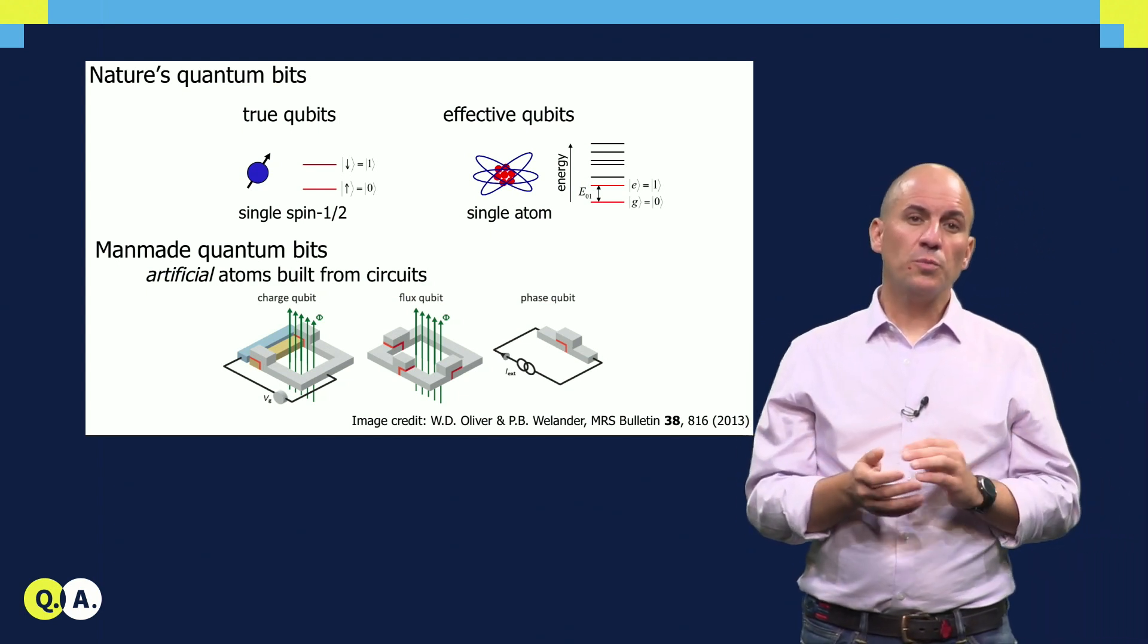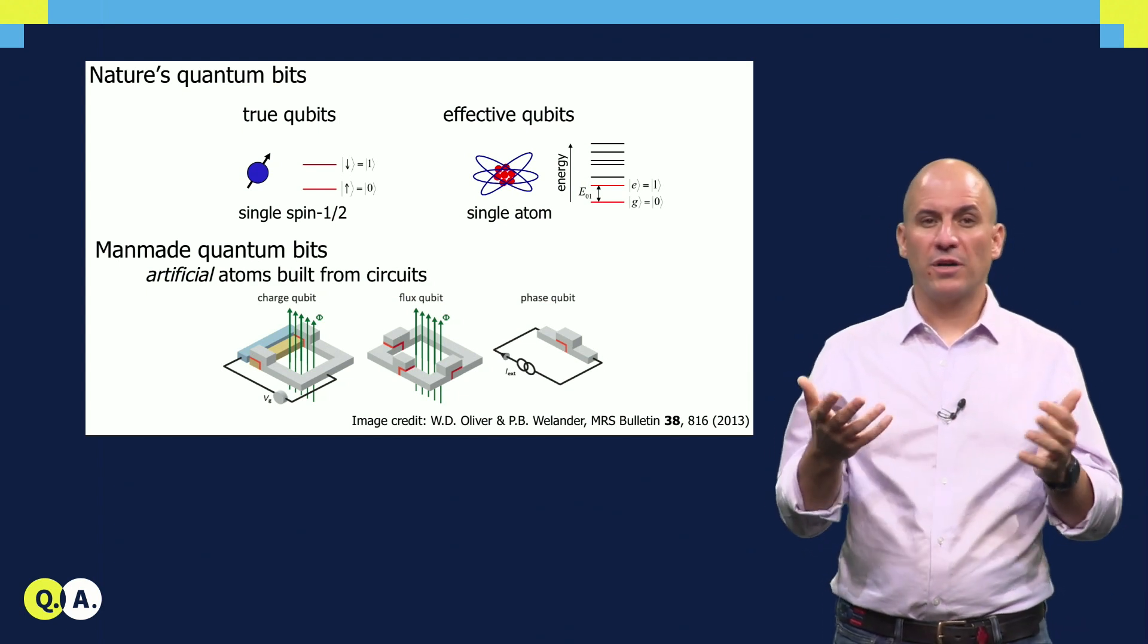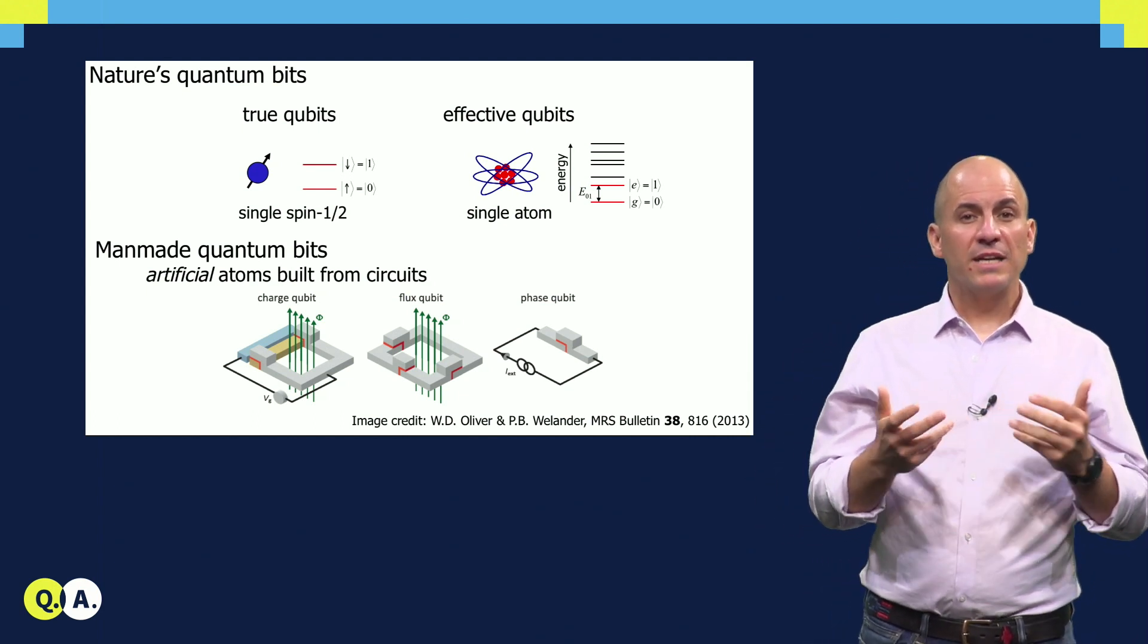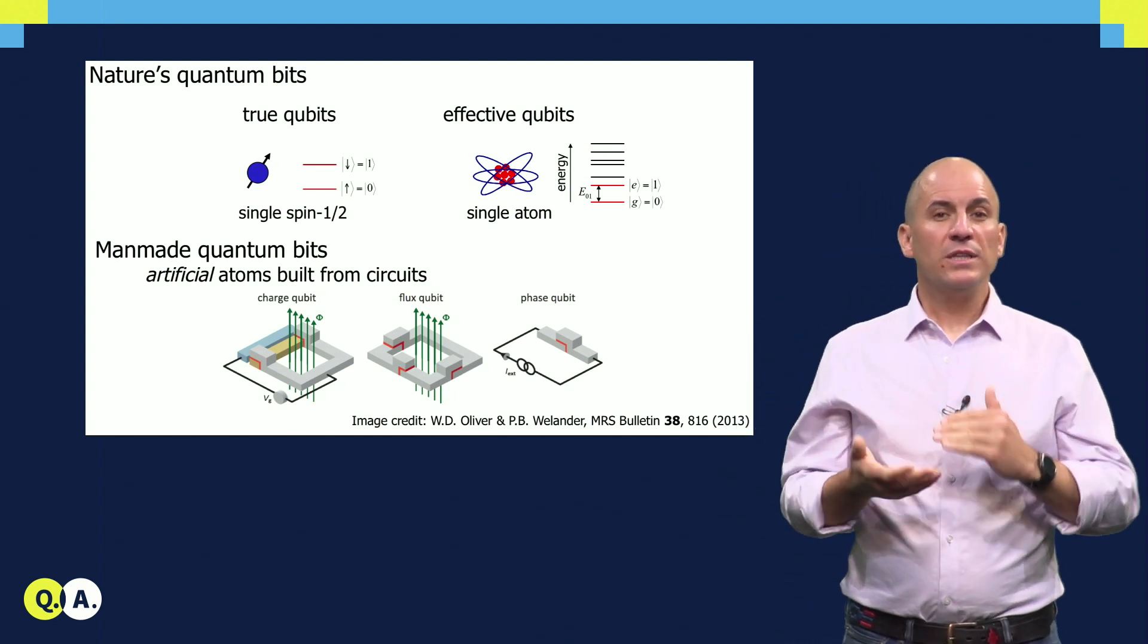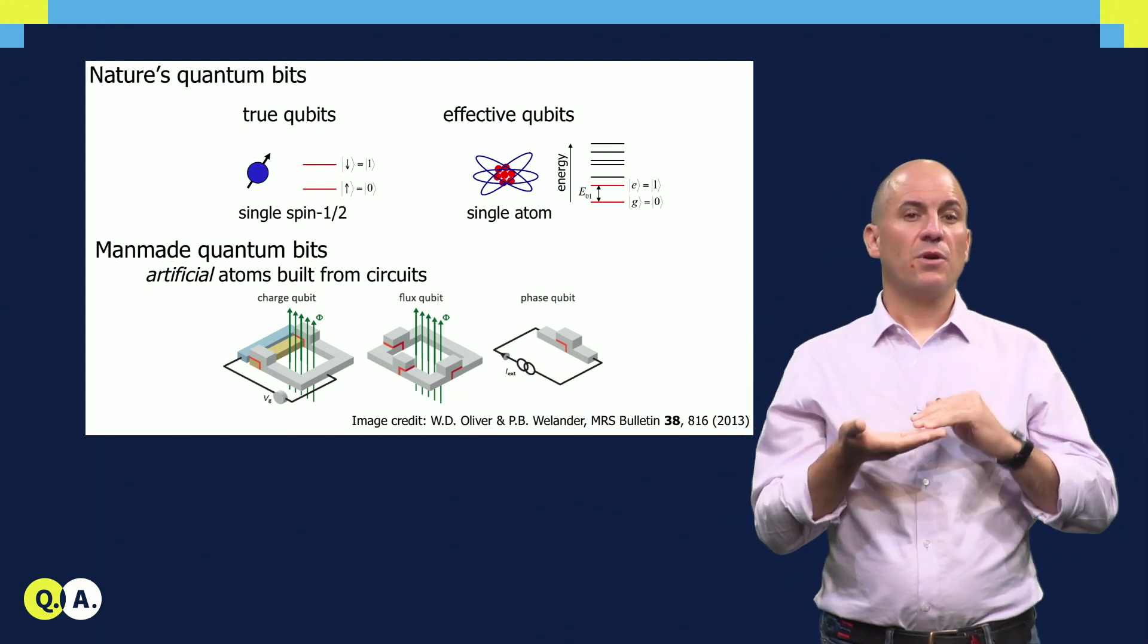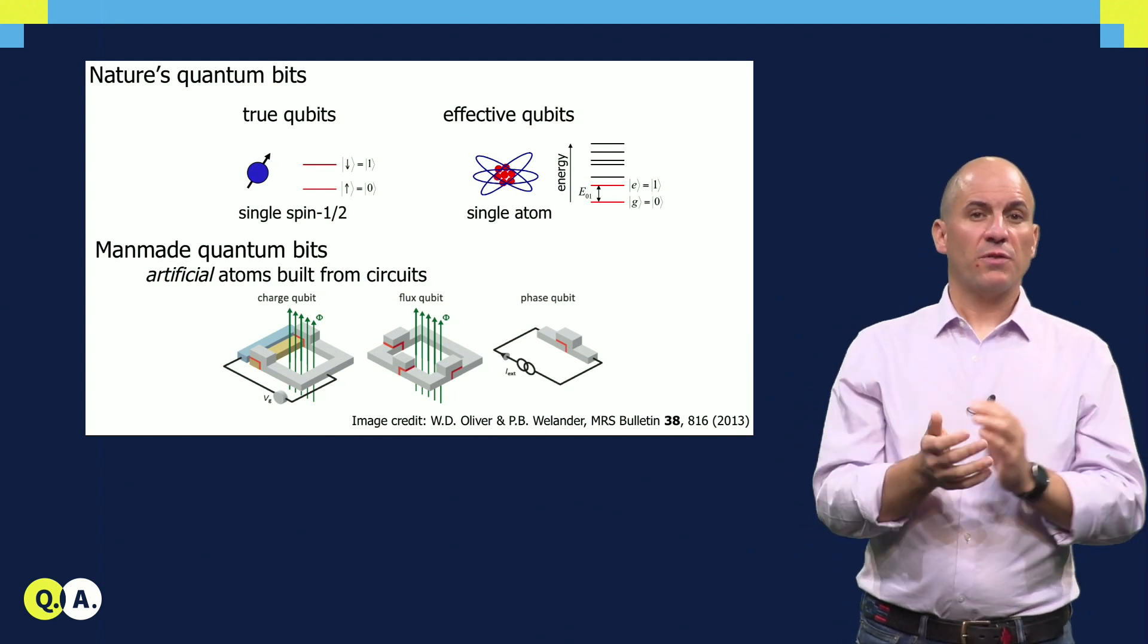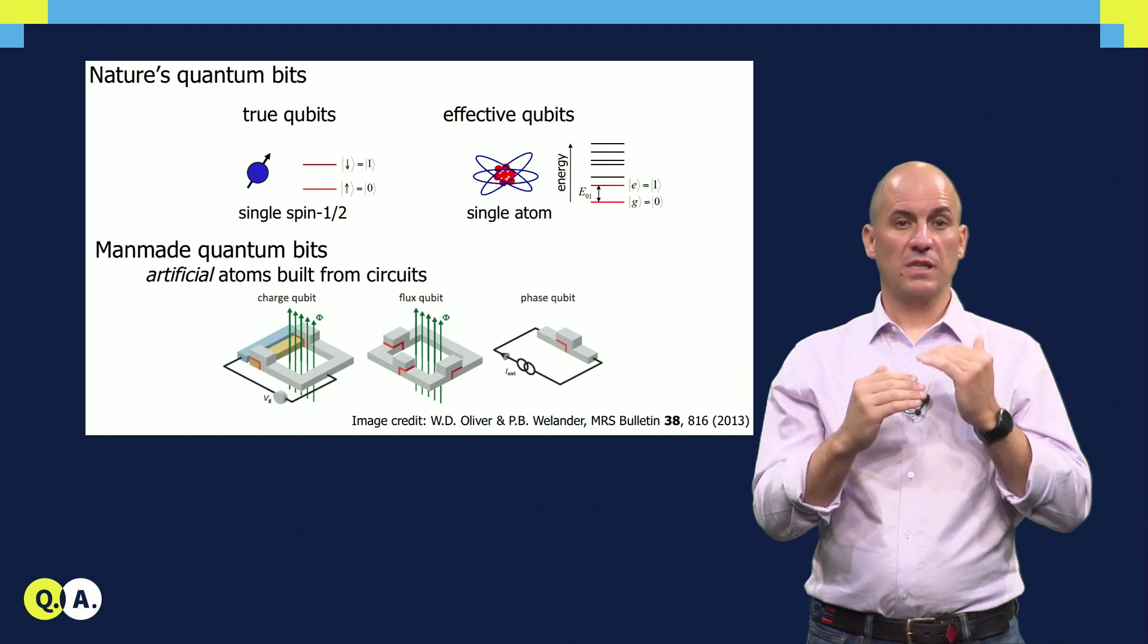Typically, superconducting qubits work in the frequency range between 4 and 8 GHz approximately. This frequency, let's call it F01, is related via Planck's constant to the energy difference E01 between the quantum levels that we assign as state 0 and 1. F01 is also the frequency of the microwave pulses that we will need to induce coherent transitions between these levels.